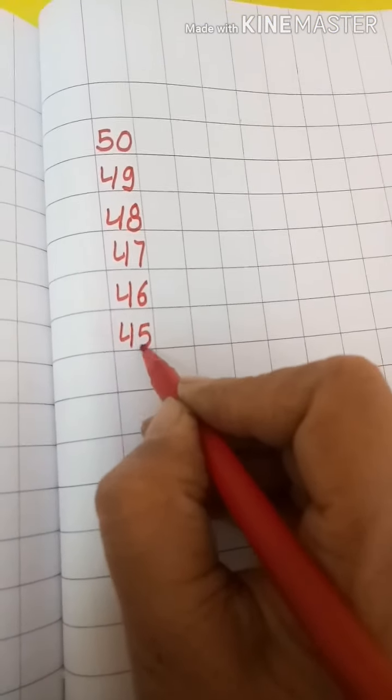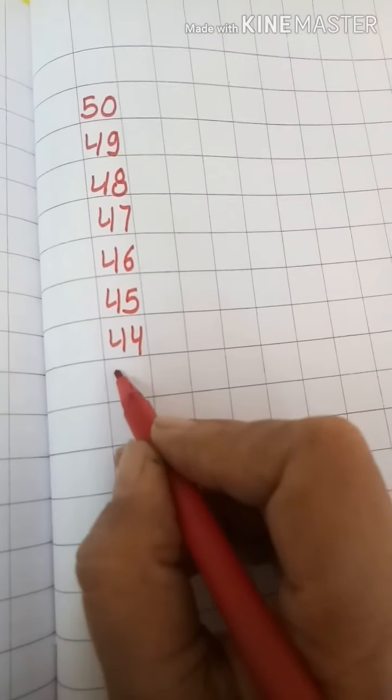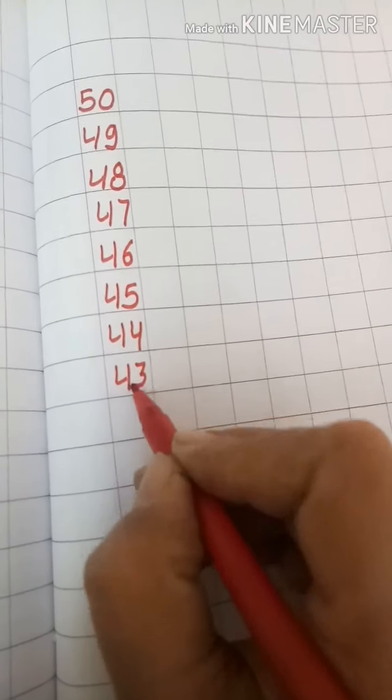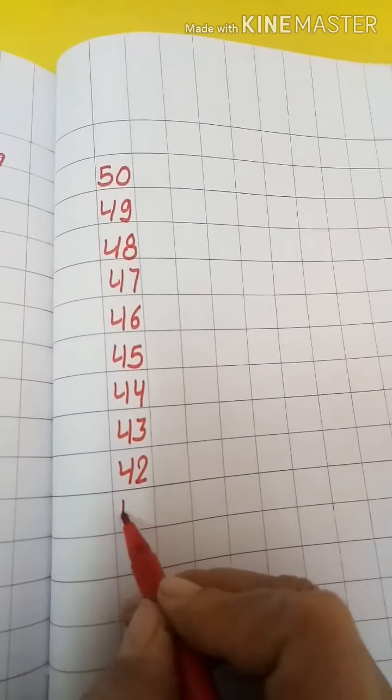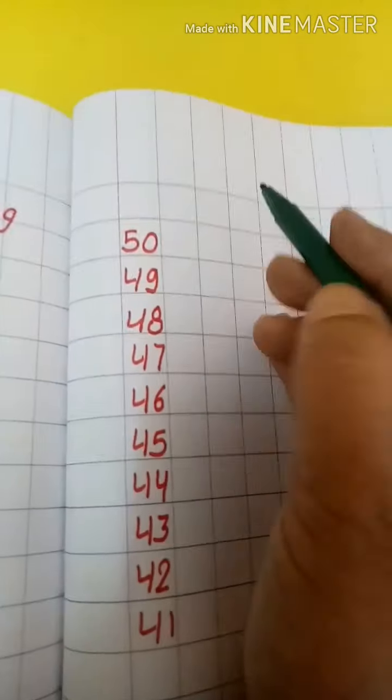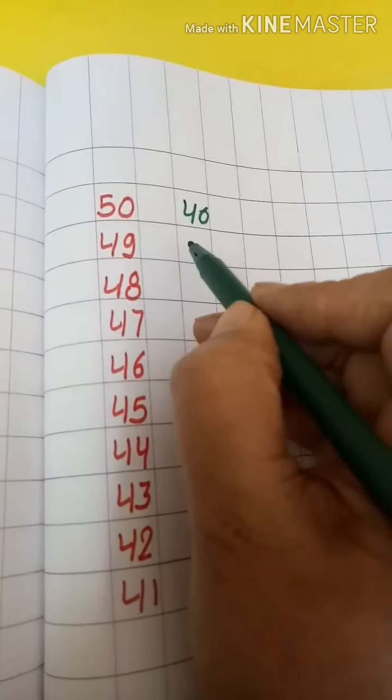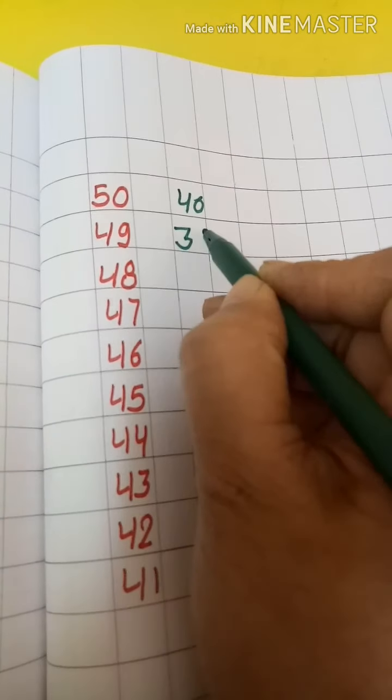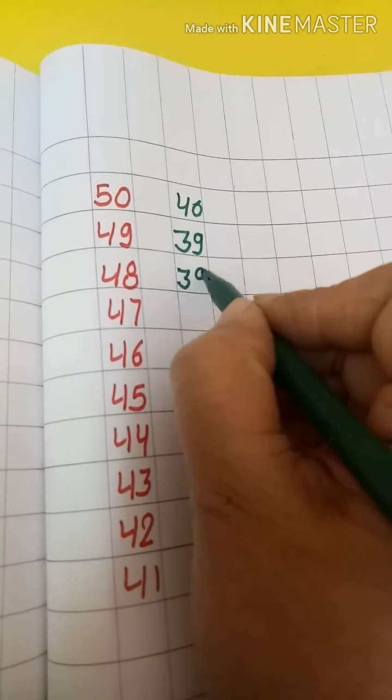45, 44, 43, 42, 41. Next है 40. 40 के पहले क्या आता है? 39, 38.